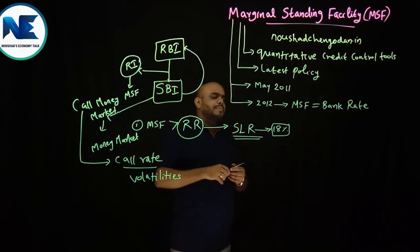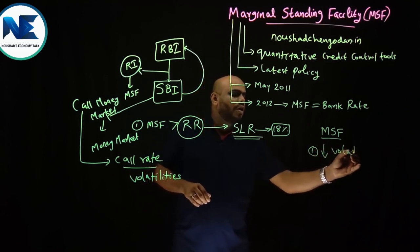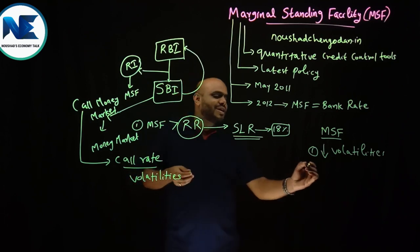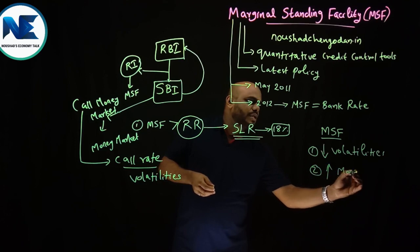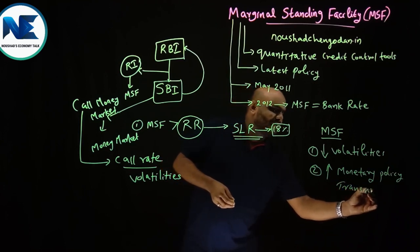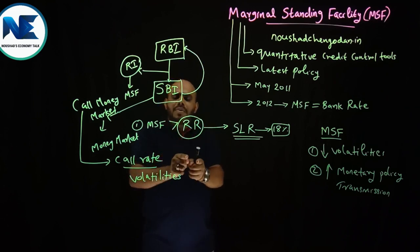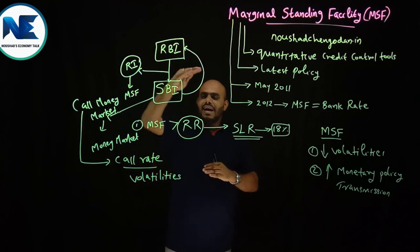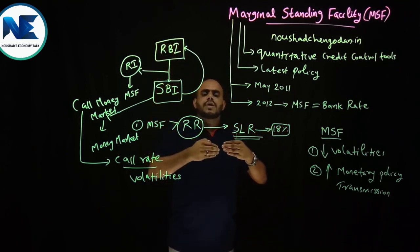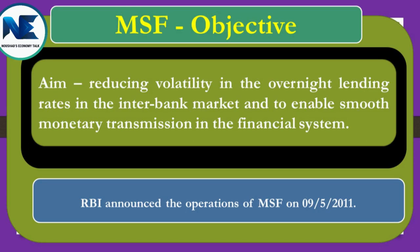What are the major objectives of MSF? The first objective is to reduce volatility in the call money market. The second objective is to enhance or promote monetary policy transmission. When RBI changes the MSF and Repo Rate, SBI should also pass on the benefit to the public, farmers, and industrialists. This is monetary policy transmission. However, in India we can see monetary policy transmission failure — RBI reduces rates but SBI does not pass it on. So MSF is looking for improvement in that area.